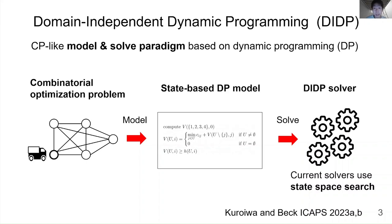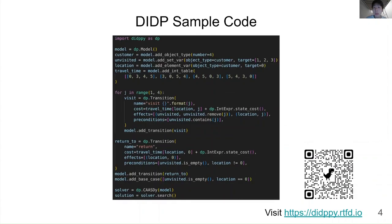In DIDP, a user formulates a problem as a declarative state-based dynamic programming DP model. Then, a user solves the model using a general-purpose DP solver. The current DIDP solvers are based on state space search. Here I show a sample program code of DIDP. The important point is that a user can formulate a DP model using a Python interface and then solve it by calling a general-purpose solver.